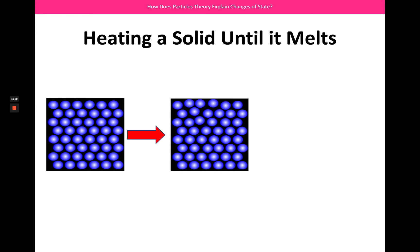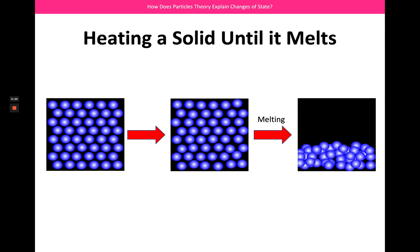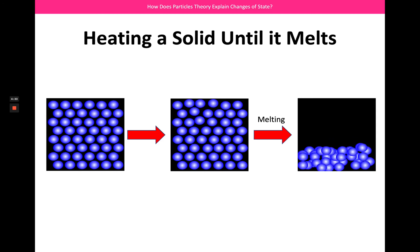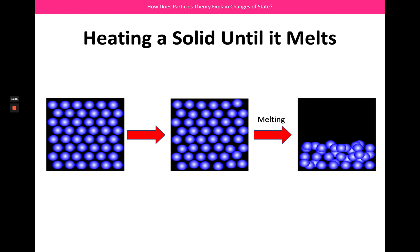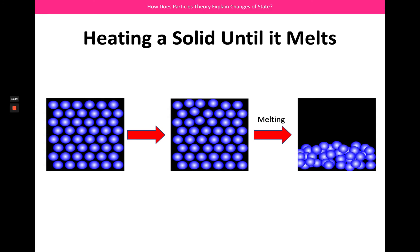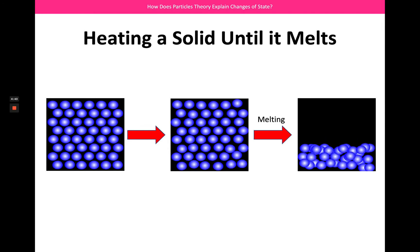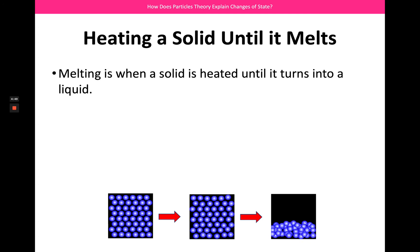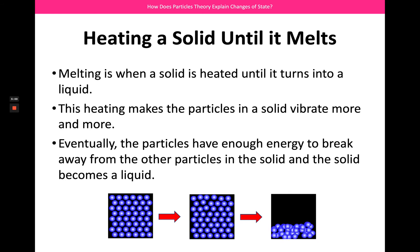If we keep heating, the particles are vibrating more and more and eventually they're going to have so much energy they can overcome their forces of attraction to a certain extent so that they actually become a liquid. So we have to put energy in to melt a substance, we have to increase its temperature — but we can see how that works in terms of the particle model. We're just making the particles vibrate more and more and more until eventually they're going to be free to move around each other. This is what melting is: heating makes the particles vibrate more until they have enough energy to break away from the other particles.